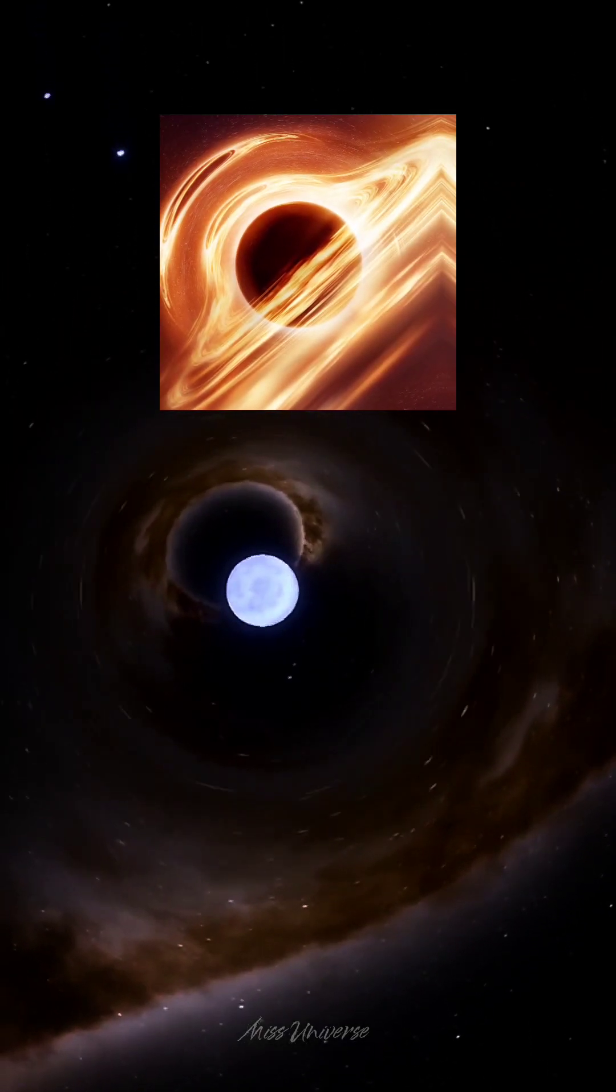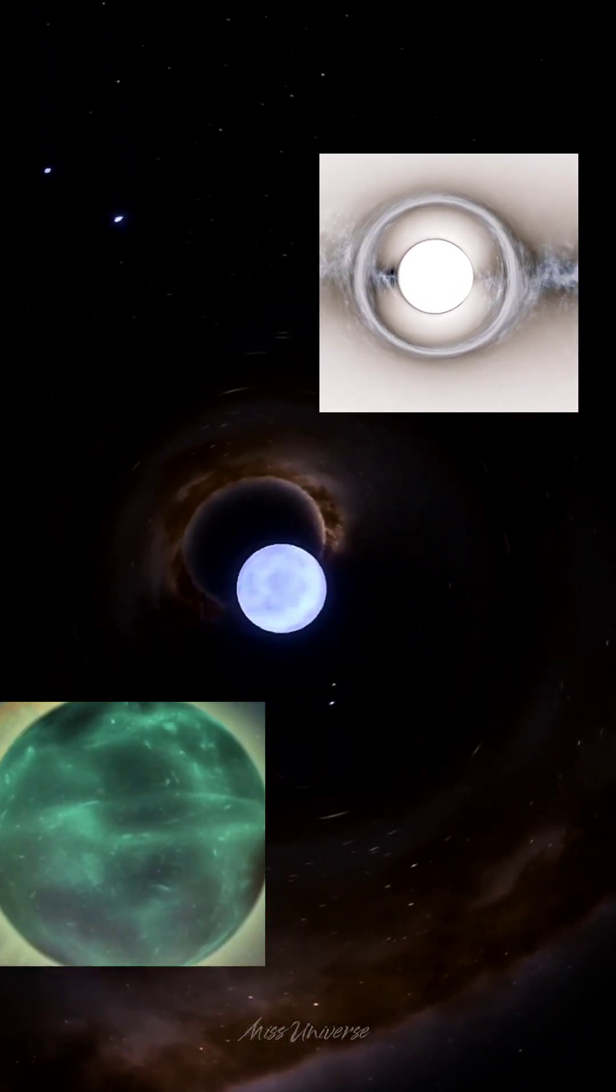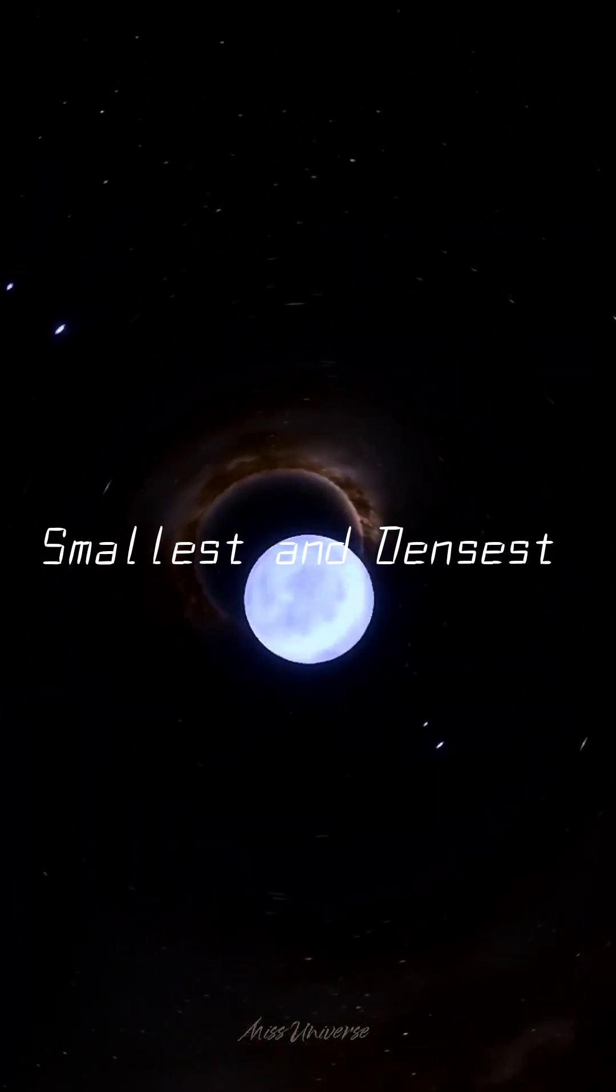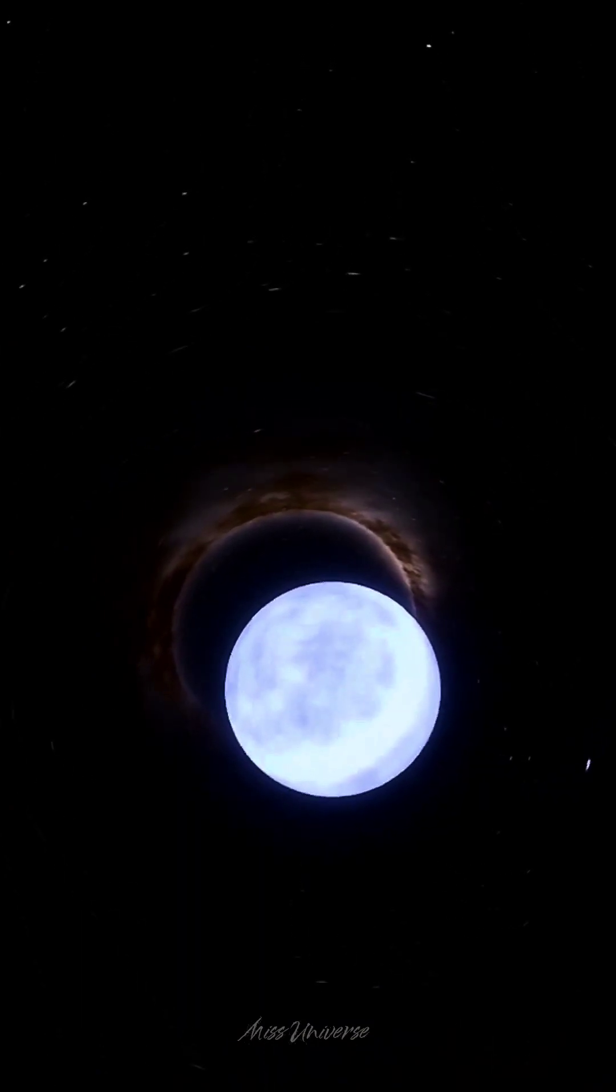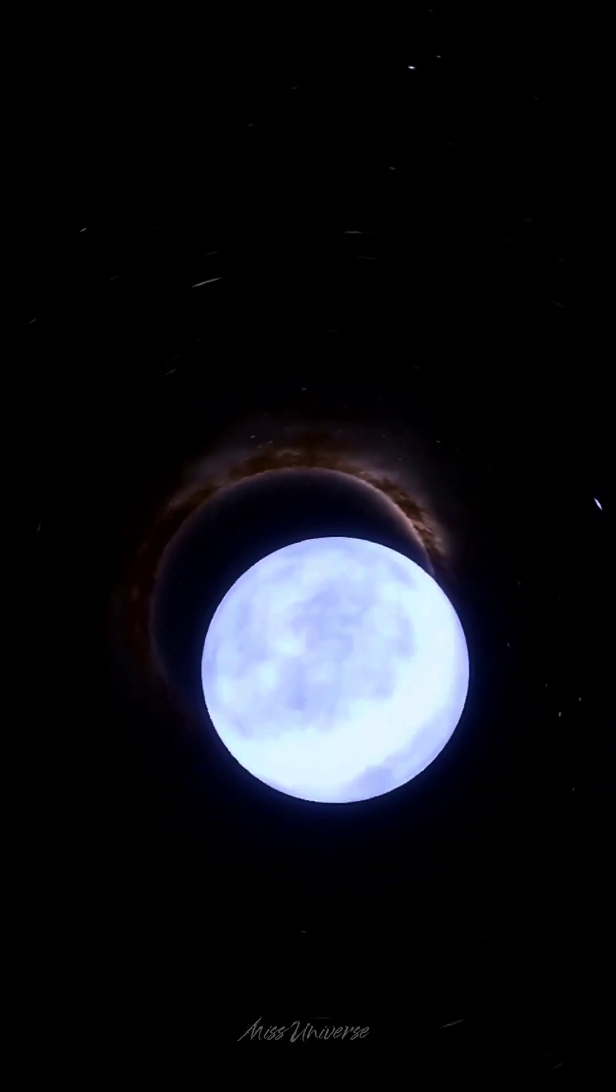Except for black holes and some hypothetical objects, neutron stars are the smallest and densest currently known stellar objects. Once formed, they no longer actively generate heat and cool over time.